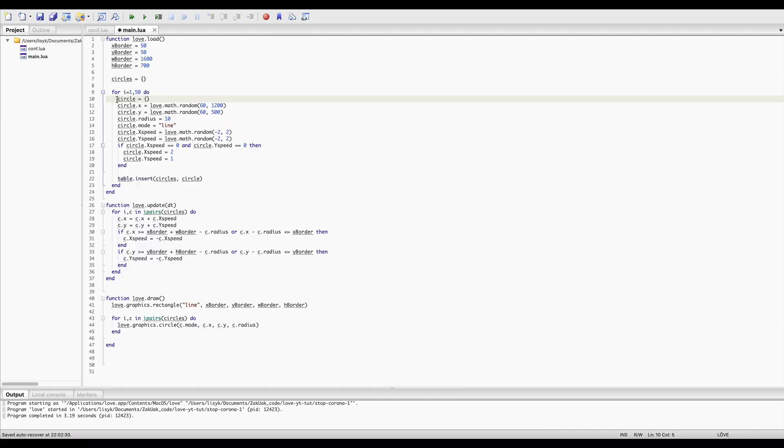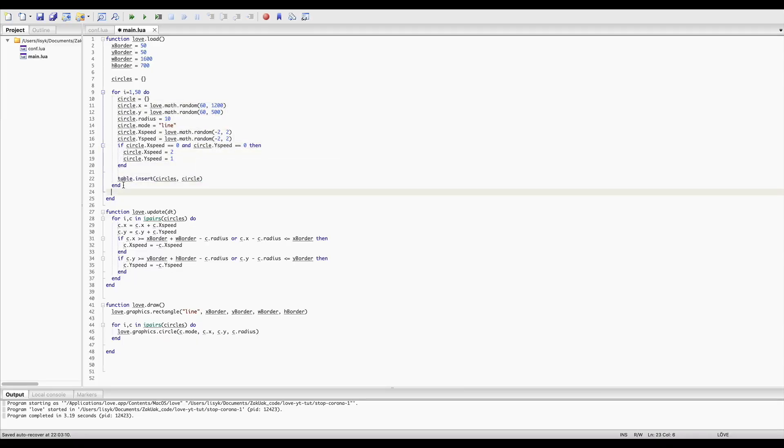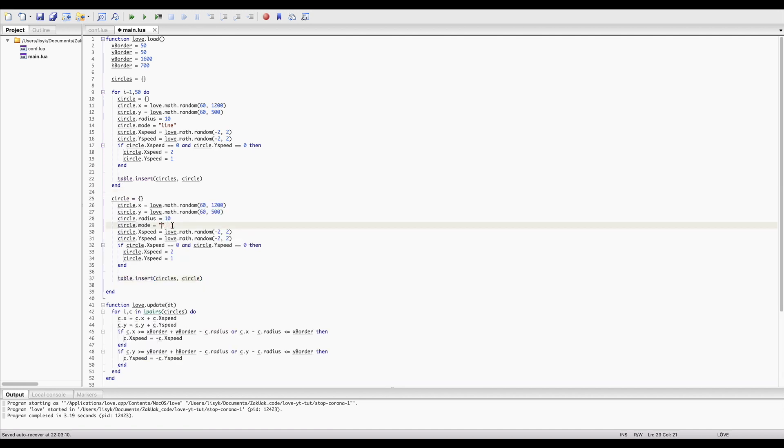Now, when all the details are explained, let's finalize our game by adding collision detection and how the virus spreads. First, we just need to add one more circle that will be infected and make it filled. Let's just copy these lines and paste it here. And let's make small changes to our circle mode. Make it filled.